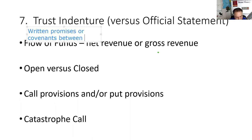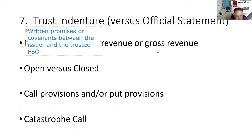The trust indenture contains the covenants between the issuer and the trustee for the benefit of the bondholders — FBO. You should definitely know that FBO means 'for the benefit of.'